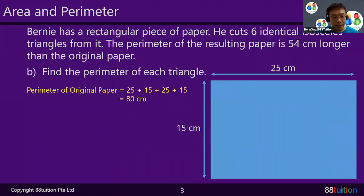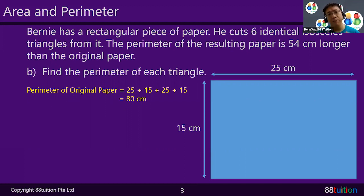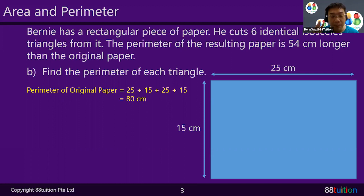Moving on to Part B — we're looking for the perimeter of each triangle. The clue says the perimeter of the resulting paper is 54 cm longer than the original. First, find the perimeter of the original paper: 25 plus 15 plus 25 plus 15, or simply (25 plus 15) times 2, giving a total perimeter of 80 cm.